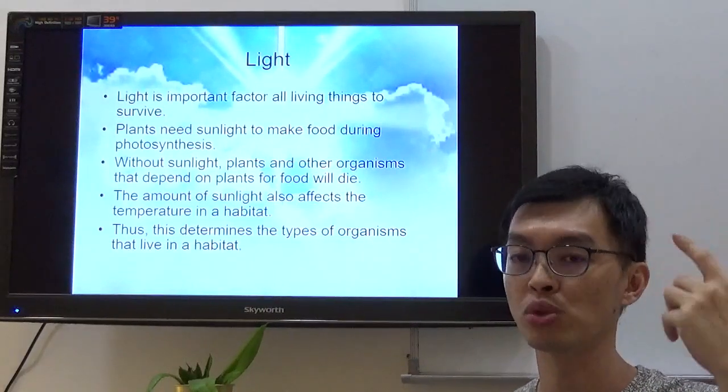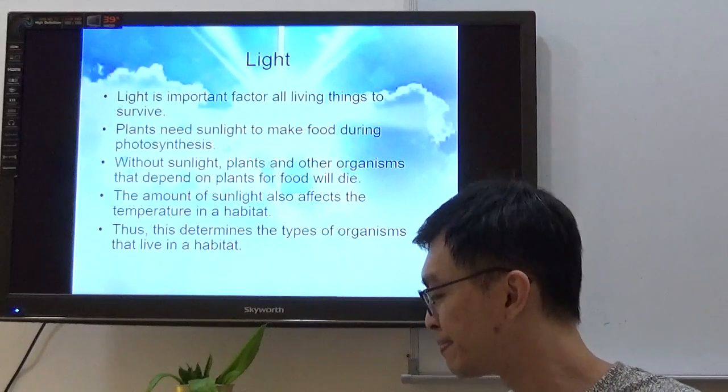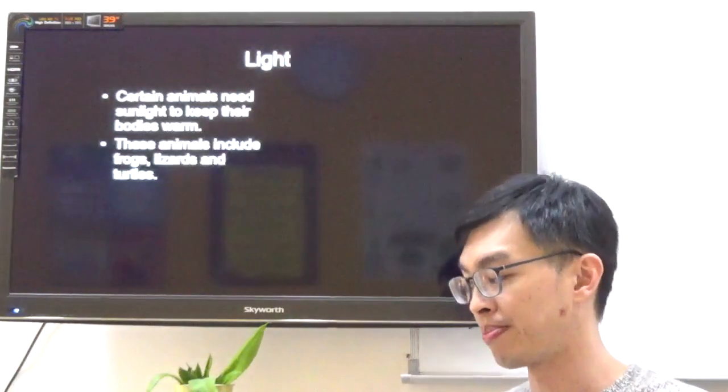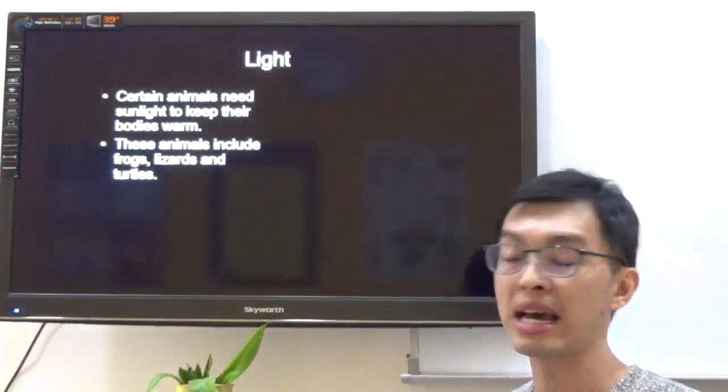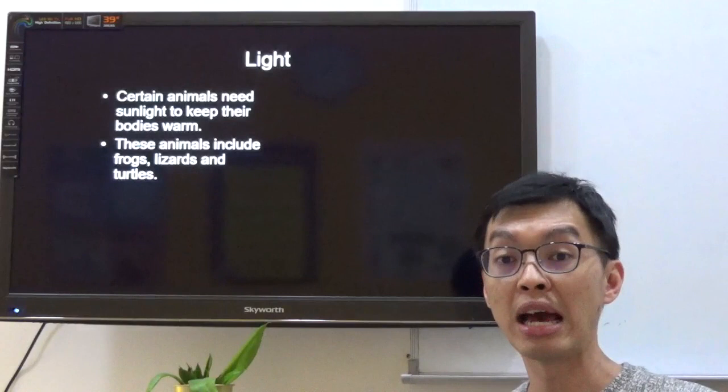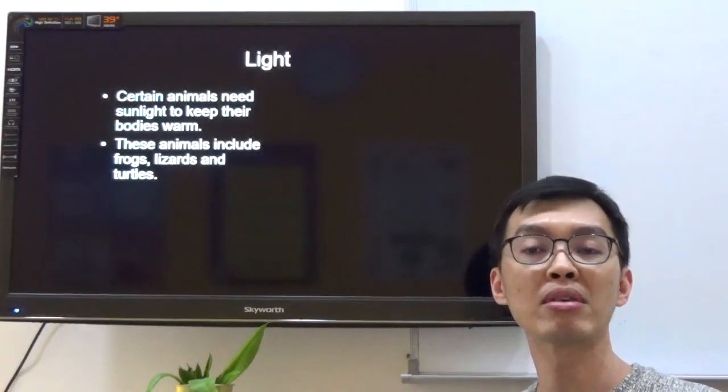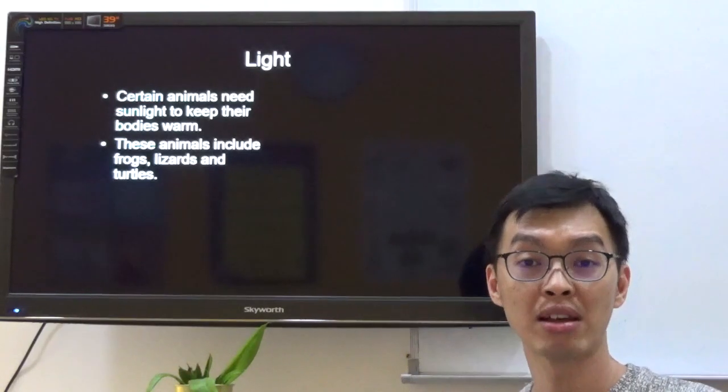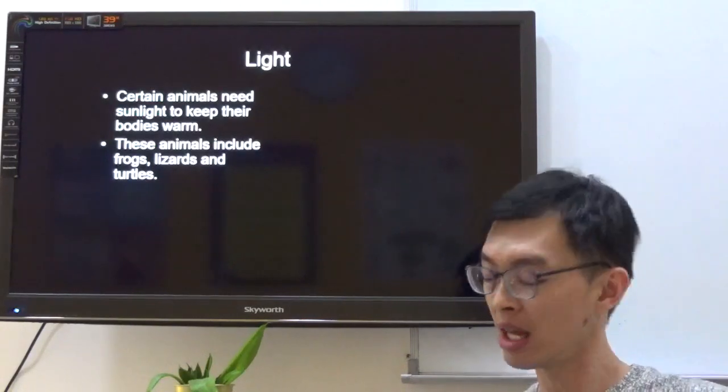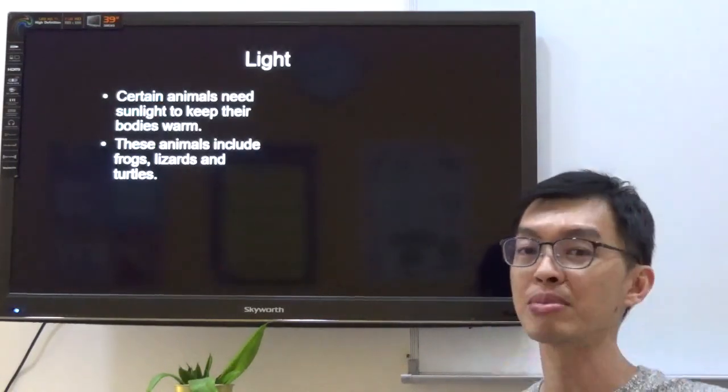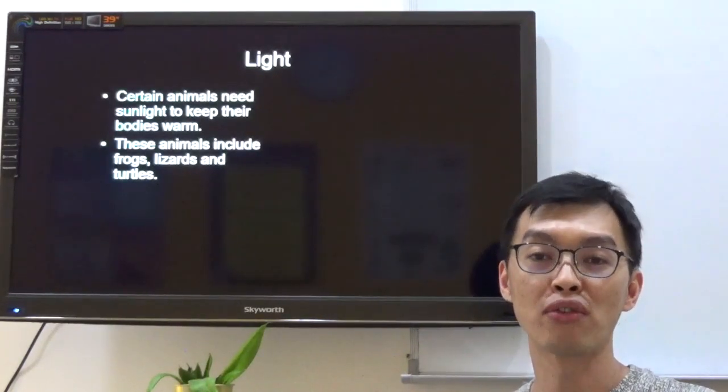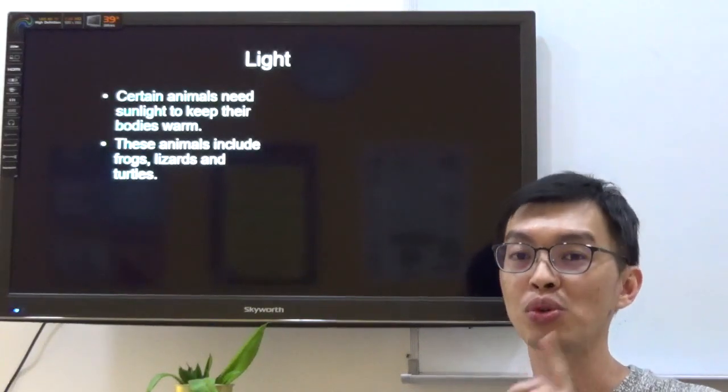So, always base it on what we have gone through. Teacher Patrick will always try to make you recall. Now, certain animals need sunlight to keep their bodies warm. These animals include frogs, lizards and turtles. Now, in this list down here, you'll realize that they are either amphibians or reptiles. Now, amphibians or reptiles are cold-blooded animals. It means that their body temperature changes according to the surrounding. When the surrounding temperature increases, their body temperature also increases. Now, here comes the question. I'd like you to ponder on this. When we do our online conferencing, I'll be asking this question again. I need you to tell me the answer.